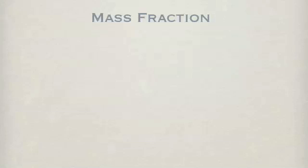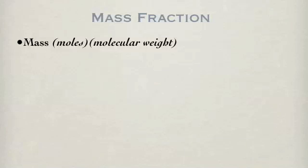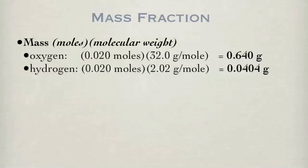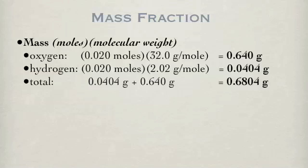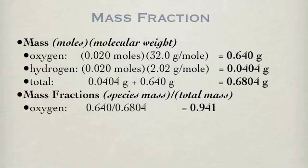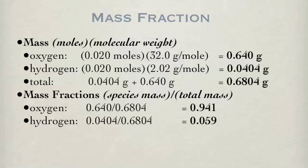To calculate mass fractions, first the masses of the individual species need to be calculated using moles times molecular weight. The total mass is the sum of the species. The mass fractions are calculated by taking the mass of each species divided by the total weight. By definition, the total mass fraction is 1.